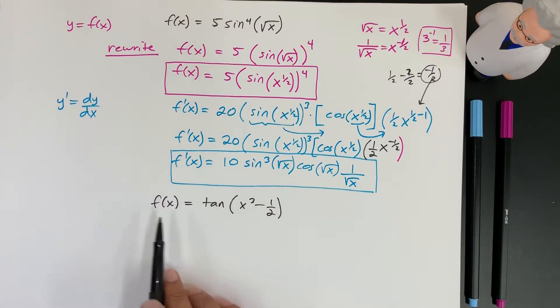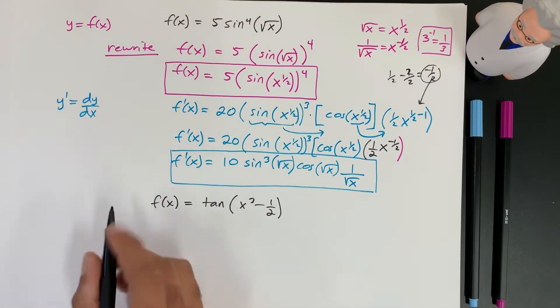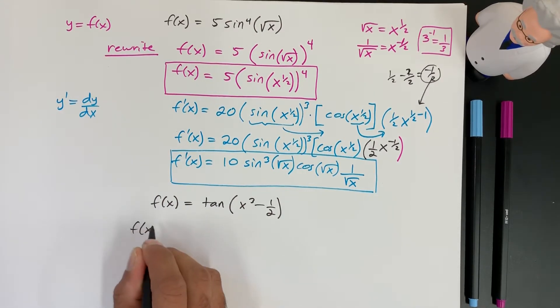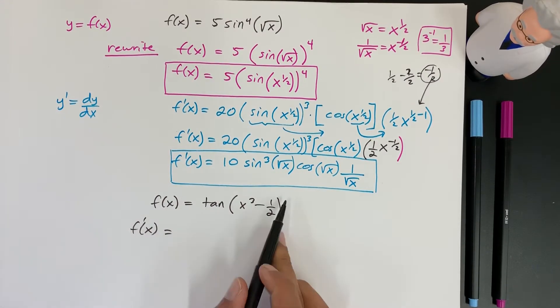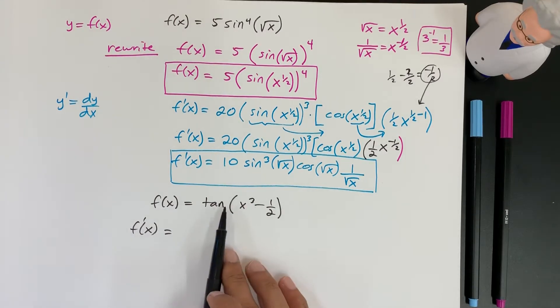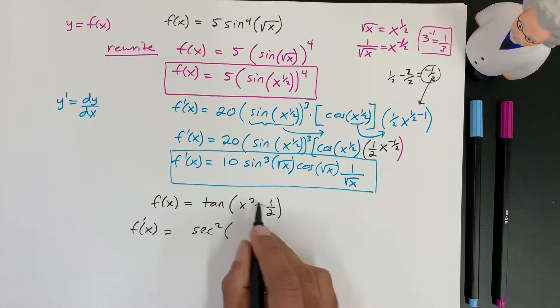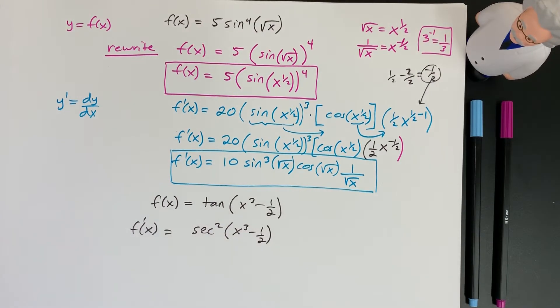And let's look at this function here. So if we take the derivative, we have no exponents, so we're good to go. And here we have the derivative of tangent, which is going to be secant squared. So we write secant squared. We write everything on the inside. And then we do chain rule. So now the derivative of all that inside.